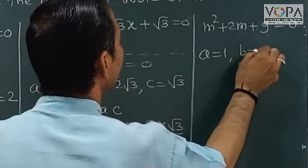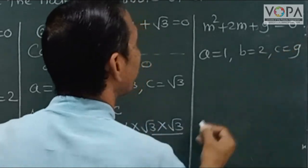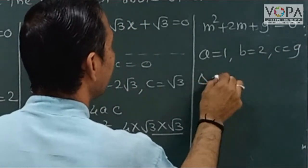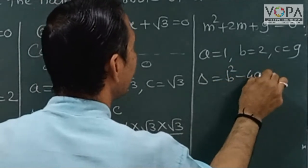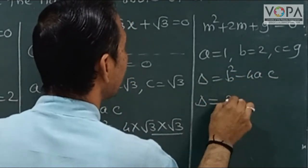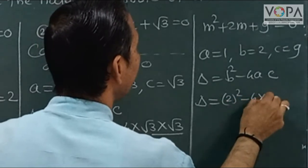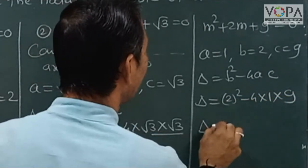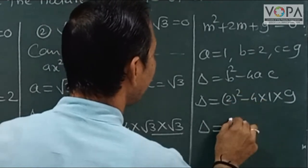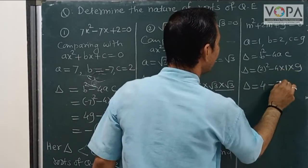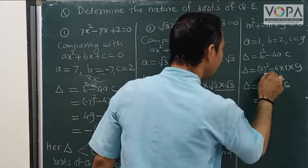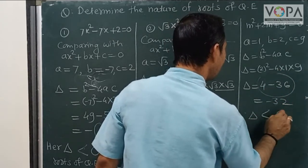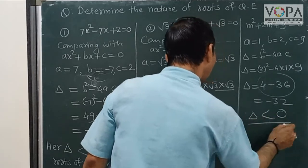In this example, the value of a is 1, b is 2, and c is 9. Delta is equal to b² minus 4ac. Substituting: delta is equal to 2 squared minus 4 into 1 into 9, that gives us 4 minus 36, which equals minus 32. So delta is less than 0.